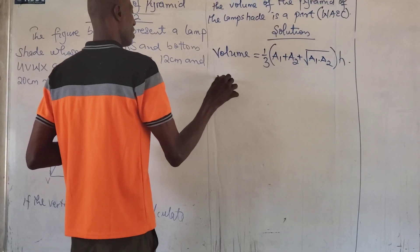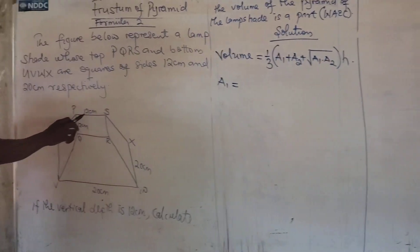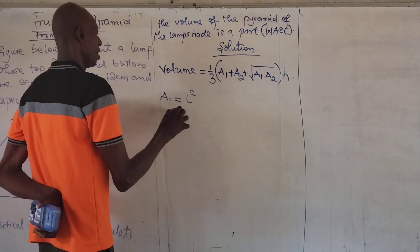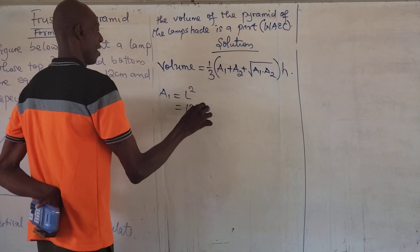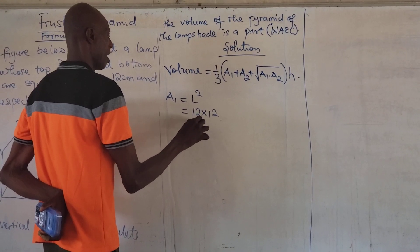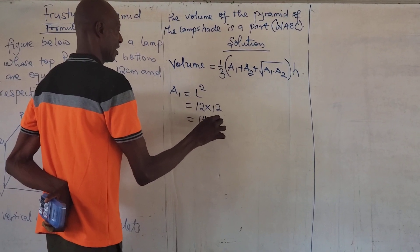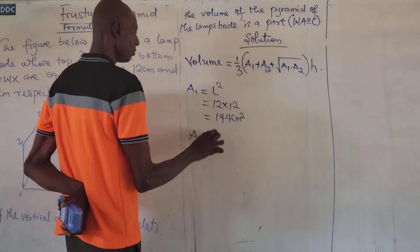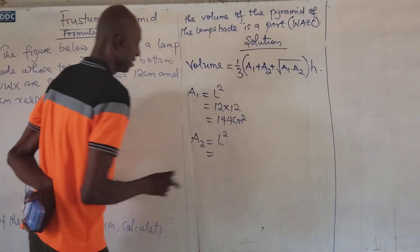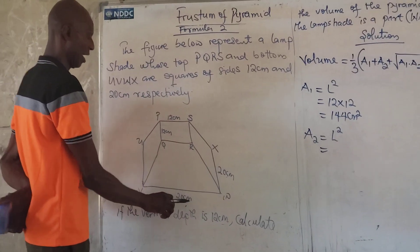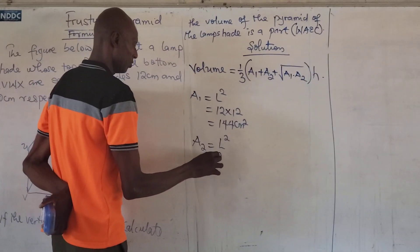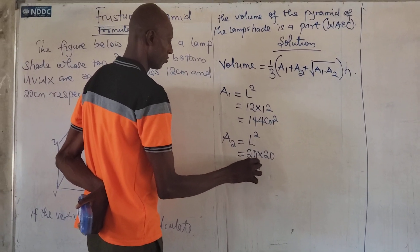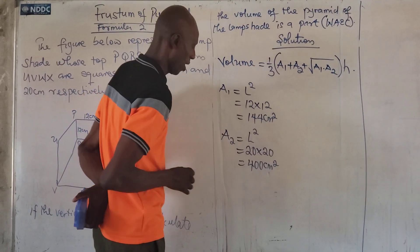Let's get area 1. The shape is square, so the area of a square is length raised to power 2, which is 12 times 12, equal to 144 centimeters squared. So let's get area 2, which is another length squared. This time it's 20 times 20, which gives us 400 centimeters squared.